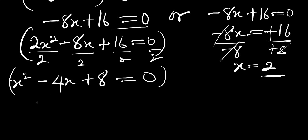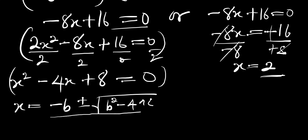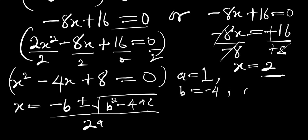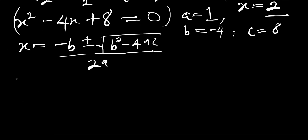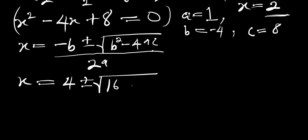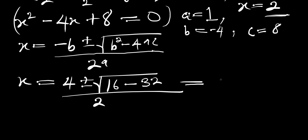We use the quadratic formula: x equals negative b plus or minus the square root of (b squared minus 4ac), all divided by 2a. Here a equals 1, b equals negative 4, and c equals 8. Substituting: x equals 4 plus or minus the square root of (16 minus 32), divided by 2.